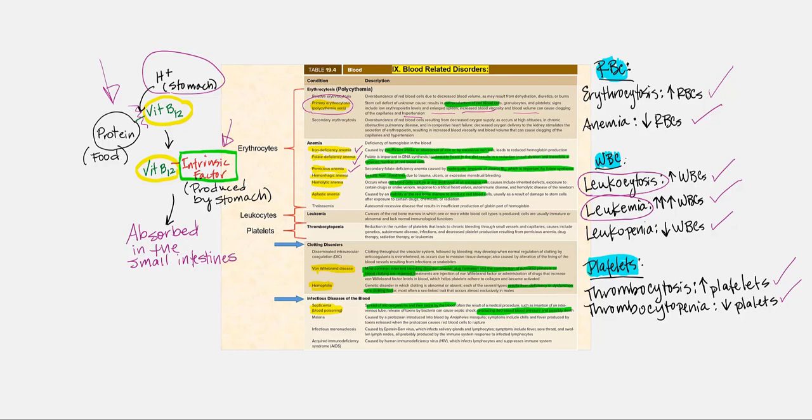Intrinsic factor is produced by the stomach. This is the only way we can absorb vitamin B12 is if it binds to intrinsic factor. Because together, they will be absorbed in the small intestines.